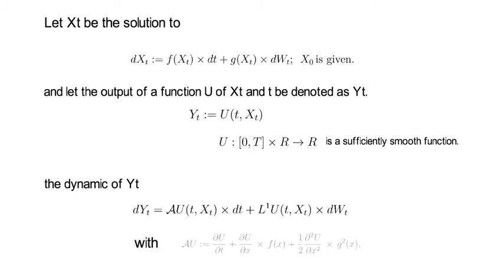The A of U is simply short form for the following longer expression. You take the first derivative of U with regard to time, you add the first derivative of U with regard to x times the drift of x, which is f of x.